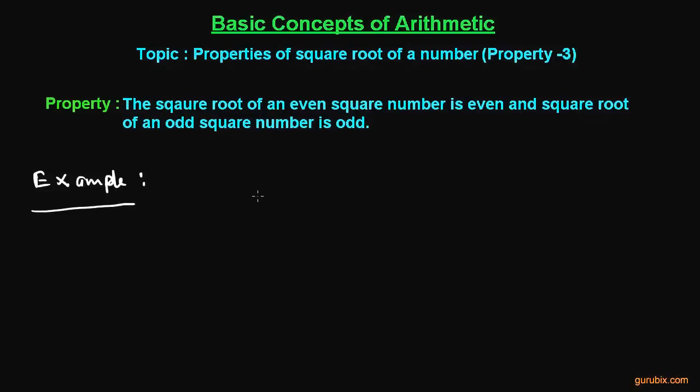Suppose we have a square number 144. We know that the unit digit is 4, so this is an even number. If we find the square root of 144, it is equal to 12. We observe that 12 is also an even number.